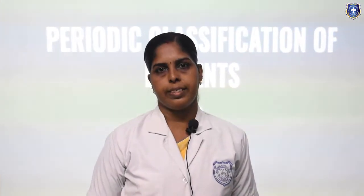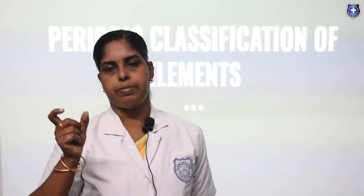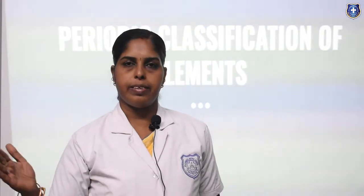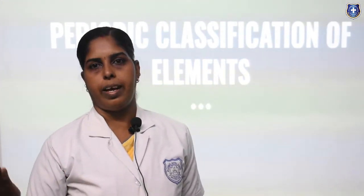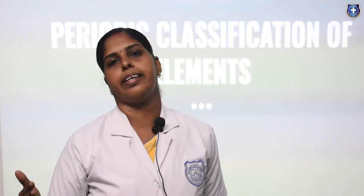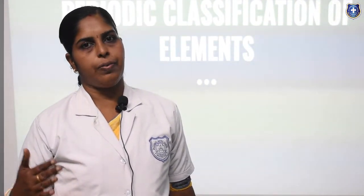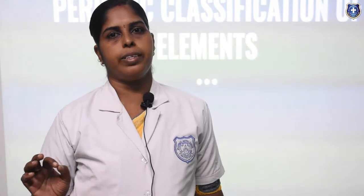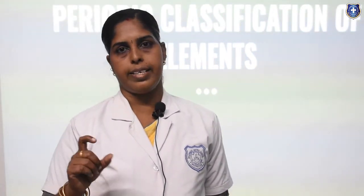Good morning. Today's unit is the periodic classification of elements. We know there is an order in our life. In our attendance register, your names are recorded in alphabetical order. If you consider a vegetable shop, the vegetables are arranged in separate racks. Like that, in our school library, different books are arranged for KG, other classes, and story books separately — for easy access. Similarly, a lot of elements have been discovered, and there is a need for arrangement of these elements. We already learned in 9th standard the early attempts of arrangement of elements.